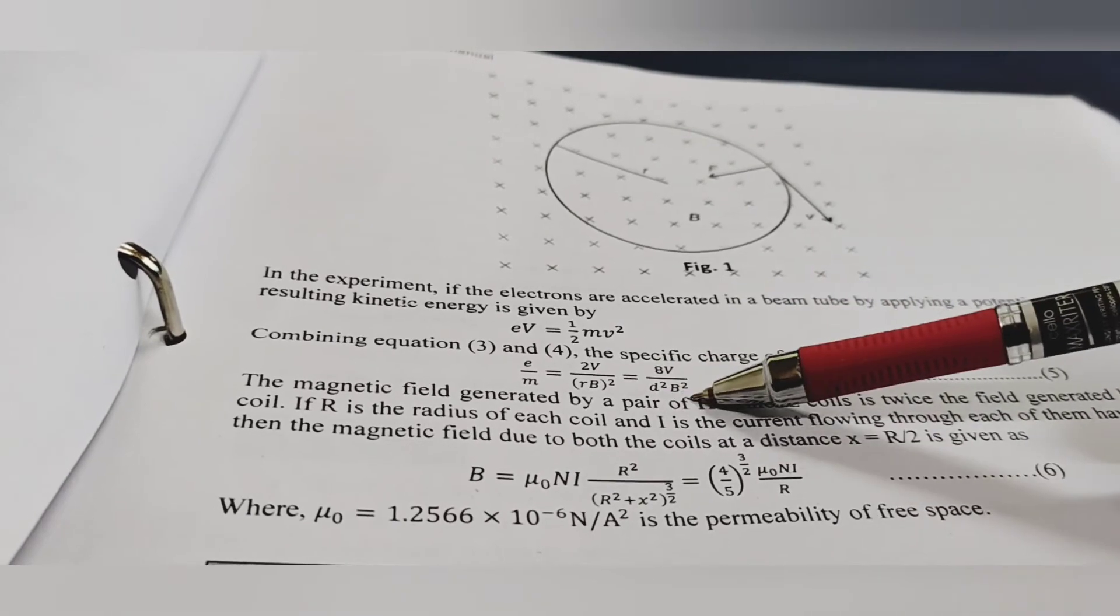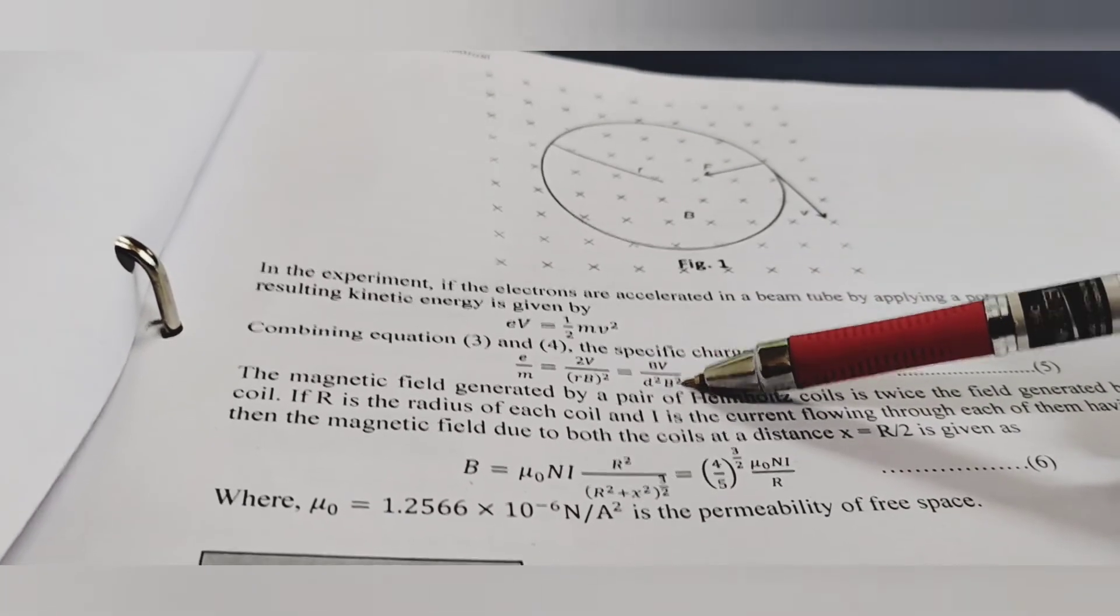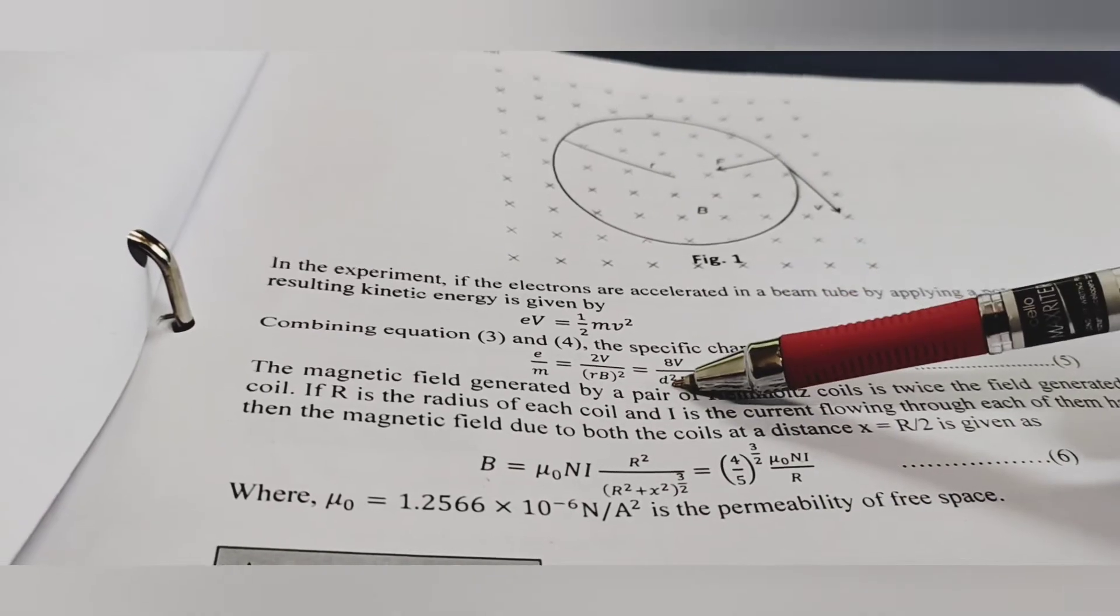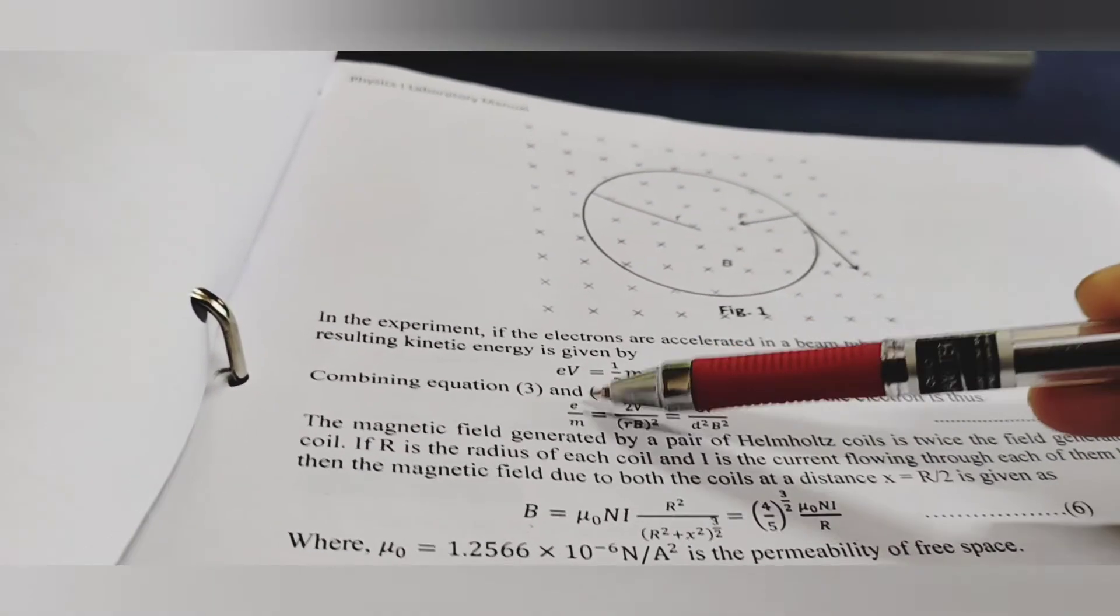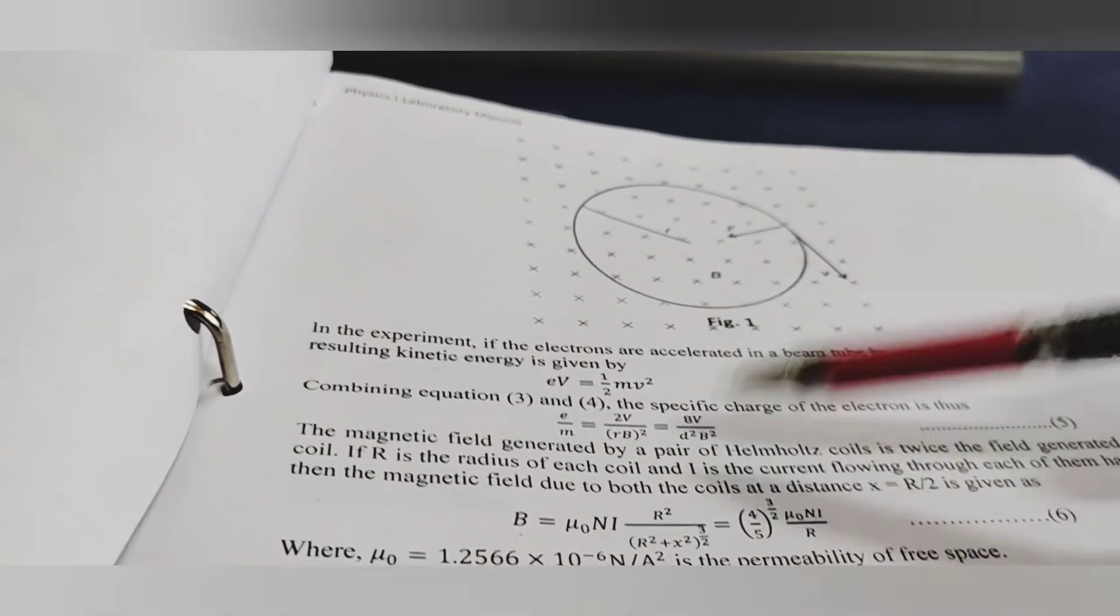8V by D square, B square. So B is the magnetic field strength, you can calculate. V by D square will be the slope of the graph. And so e by m will be calculated easily.